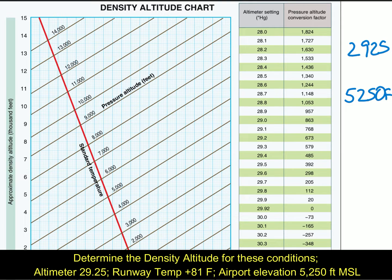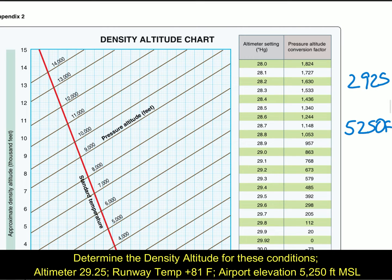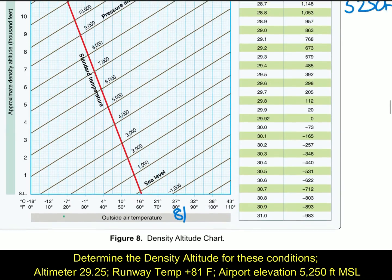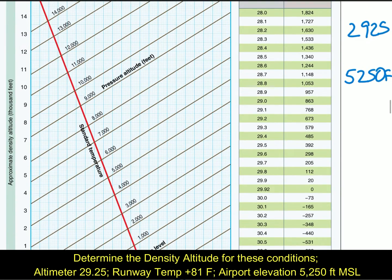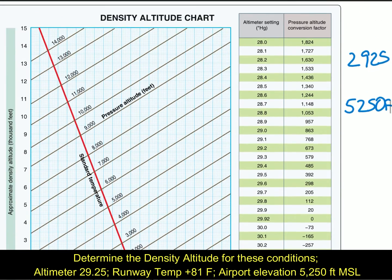Let's take a look at figure 8 — that's your density altitude chart. The first thing you have to do is the pressure altitude conversion. This takes your altimeter setting and your airport elevation and converts it to a pressure altitude, which is what we'll use to determine our density altitude.